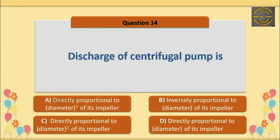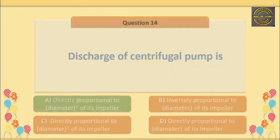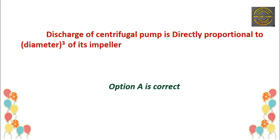Q14. Discharge of a centrifugal pump is — option A is correct — directly proportional to the diameter cubed of its impeller. Explanation: Discharge of a centrifugal pump is directly proportional to the diameter cubed of its impeller. Option A is correct.